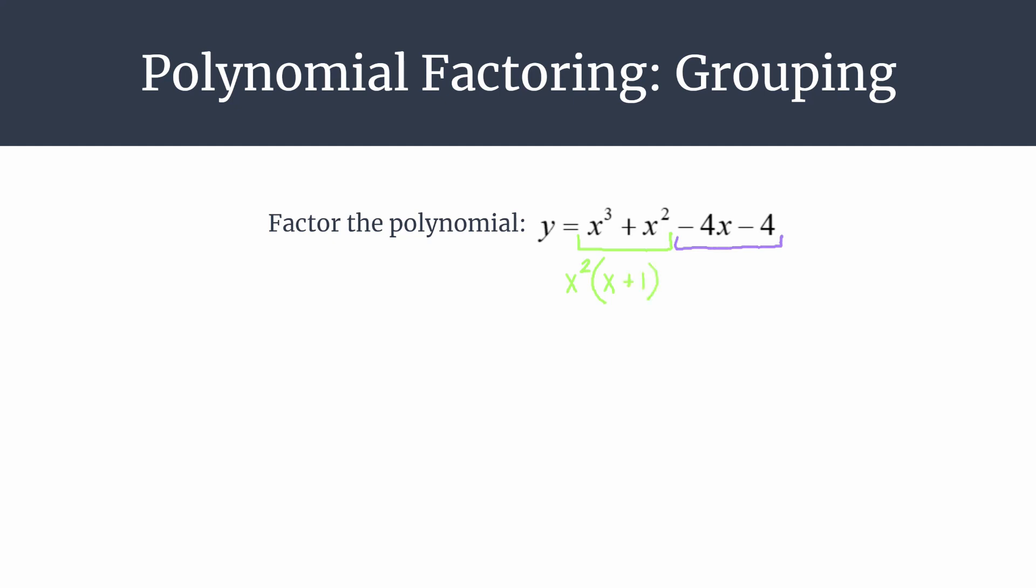We'll pause on the green group and move to the purple group. In our purple group we are dealing with minus 4x minus 4, so pretty clearly here our greatest common factor or GCF is a negative 4. Pull out that negative 4 and we'll note what we're left with in parentheses. Basically you're undistributing here, so we're left with an x and then plus 1. Multiply that out if you aren't sure, double check that you have factored correctly.